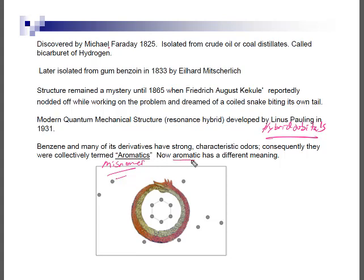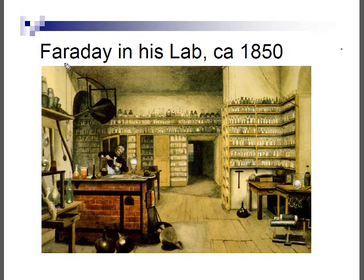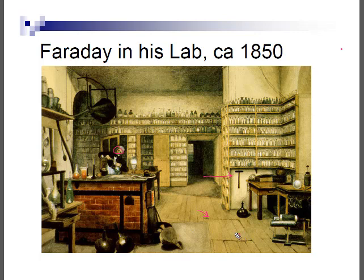Here we see a painting of Michael Faraday in his lab around 1850. A couple of things you'll notice: first, he is not wearing any lab goggles — a no-no. There's also a hammer, which was used to bludgeon students who didn't do their homework. And there's a trap door in the floor for especially unruly students who fell asleep in lecture, didn't do their homework, or showed up late for lab.